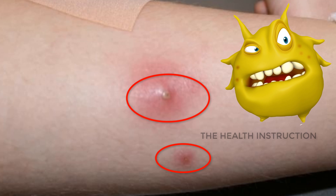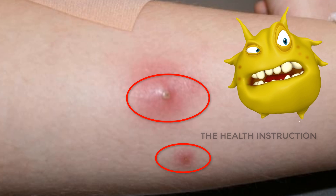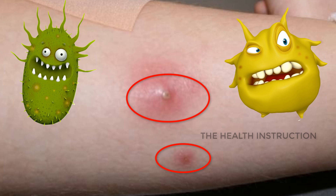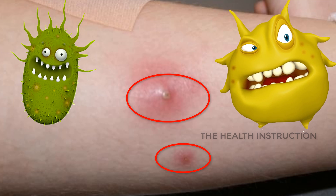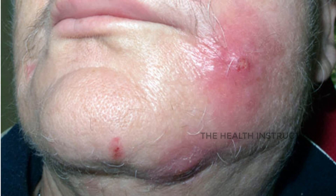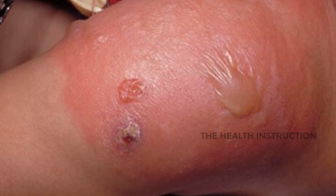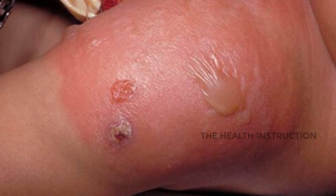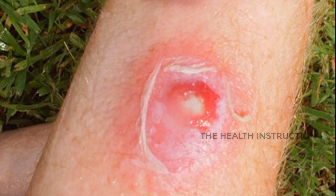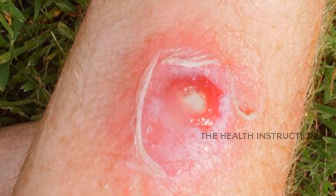Staph infections are caused by bacteria called Staphylococcus aureus and are usually easy to treat. Skin infections are the most common type of staph infection and often occur when a burn or wound gets contaminated. Fortunately, many infections are minor and heal quickly if you keep the area clean and bandaged. However, you should see a doctor if symptoms worsen or if you develop a fever.